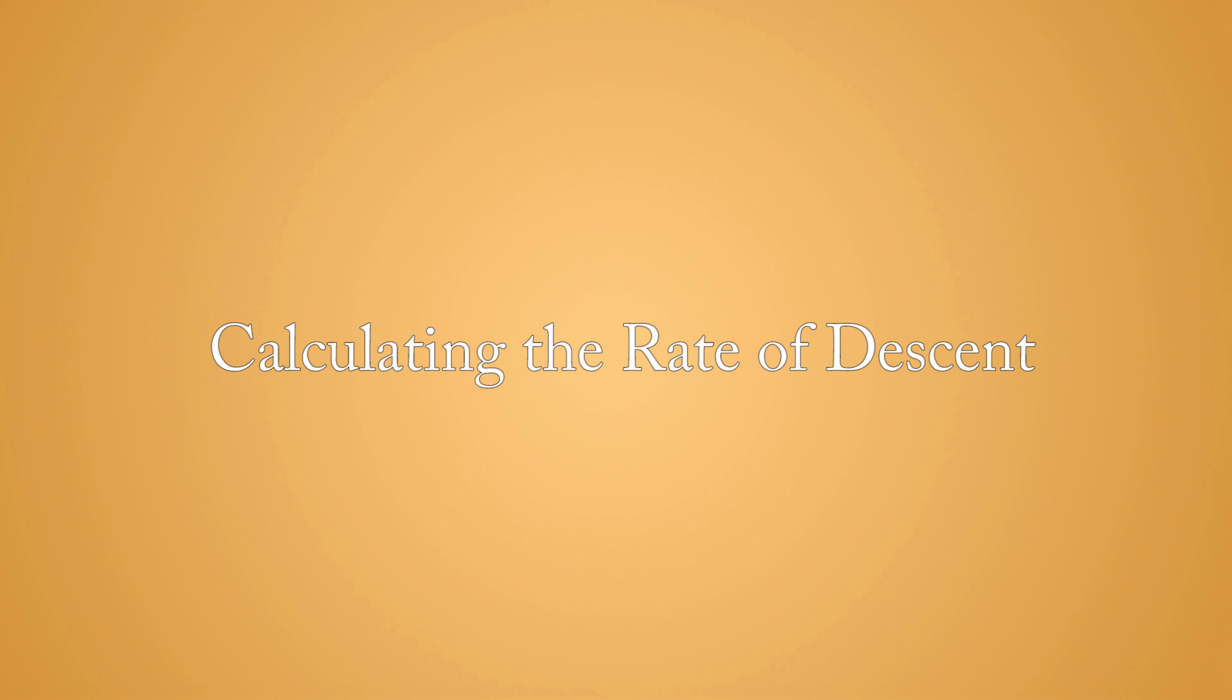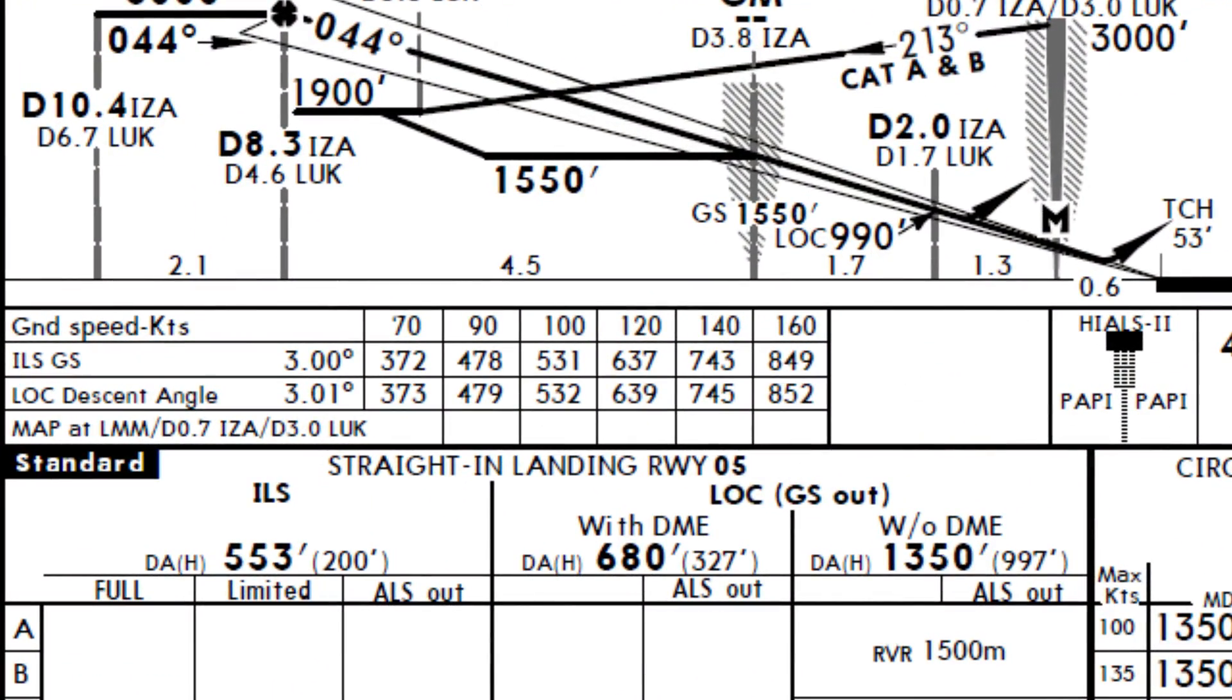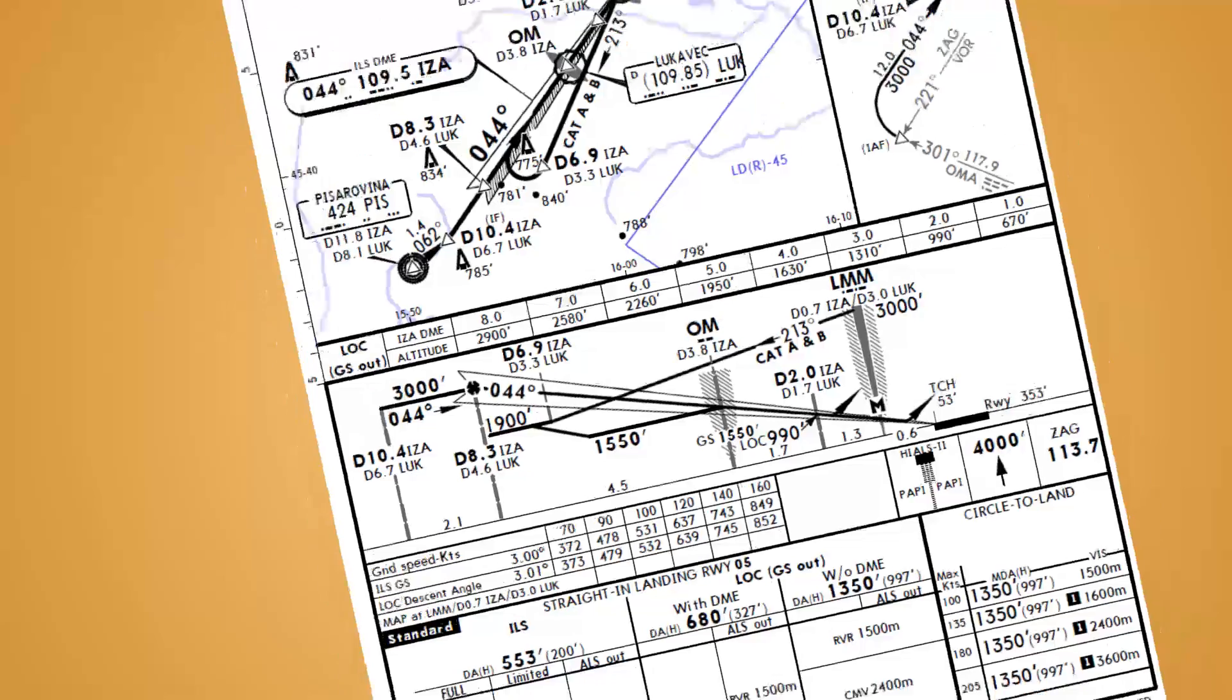Hello everyone! This video will briefly explain how to calculate a rate of descent for a given airspeed and glide path. Approach charts usually have this information written on them already for a specific approach, but in case you're wondering, this is how you get it.